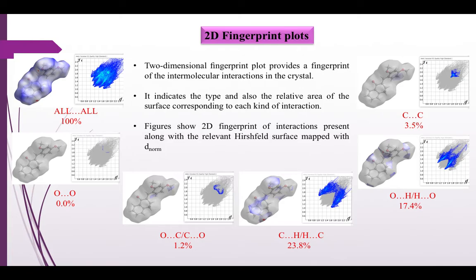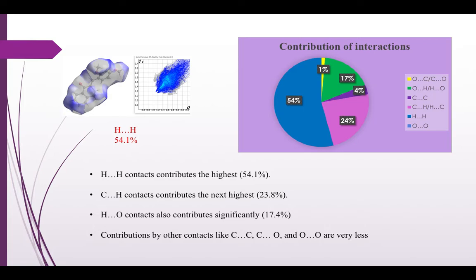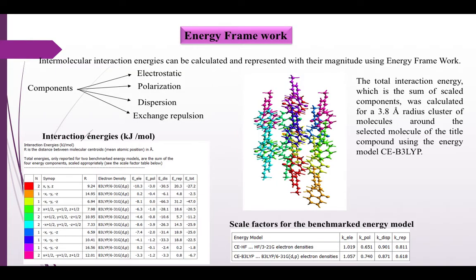Two-dimensional fingerprint plots provide a fingerprint of the intermolecular interactions in the crystal. They indicate the type and also the relative area of the surface corresponding to each kind of interaction. Figures show 2D fingerprint plots of interactions along the relevant Hirschfeld surface mapped with D-norm. The H···H contact contributes the highest with 54.1%.